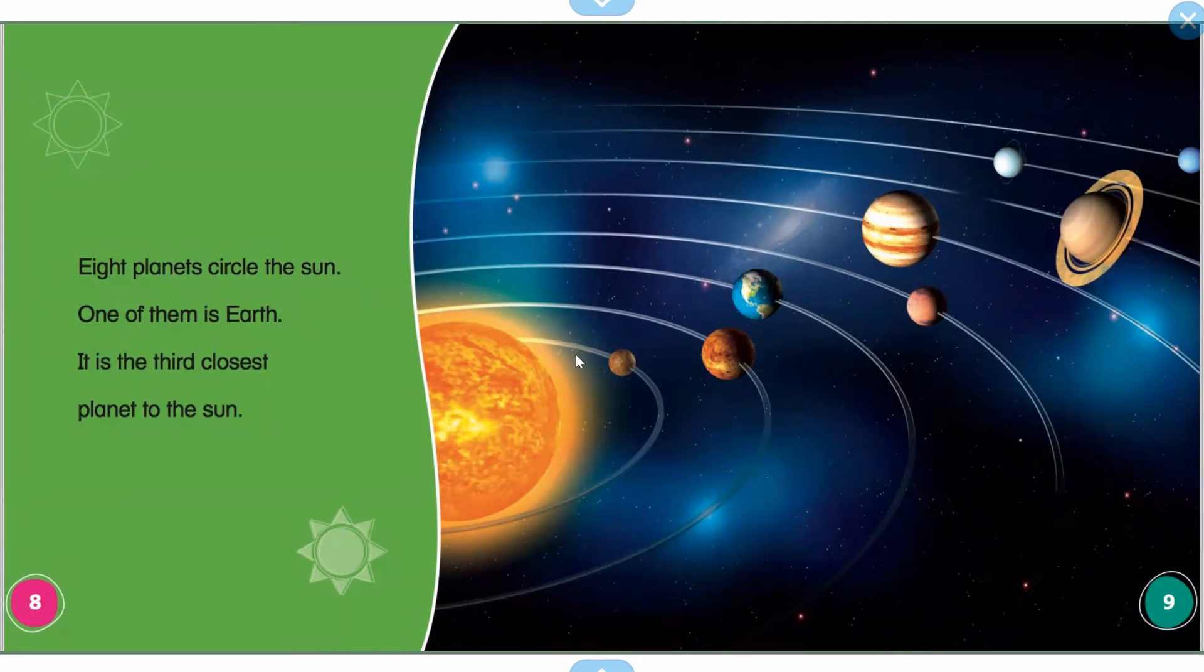So here's the sun and then remember there's these imaginary rings or like a leash that the planets follow when they go around the sun. So first we have Mercury, then Venus, and then Earth. We're right here. So we go to the sun and we go one, two, three. We are the third planet from the sun.